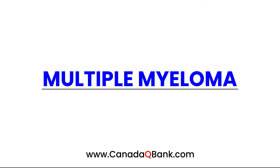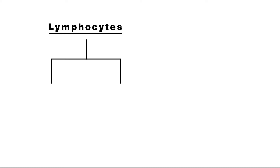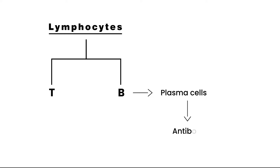Multiple myeloma is the topic for this video, and I want to give a brief review of the types of blood cells we're going to be talking about. Lymphocytes branch out into T and B cells, and B cells differentiate into plasma cells. Plasma cells produce antibodies, also known as immunoglobulins, or Ig, and immunoglobulins are at the heart of multiple myeloma.